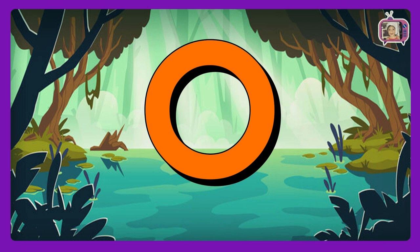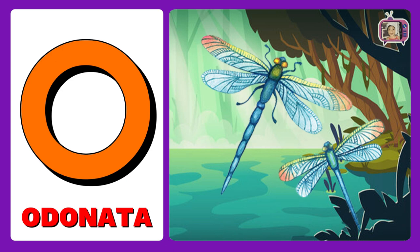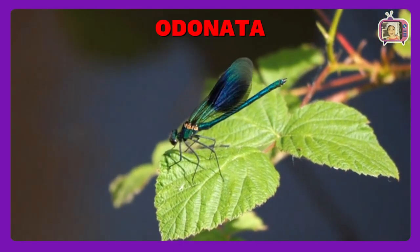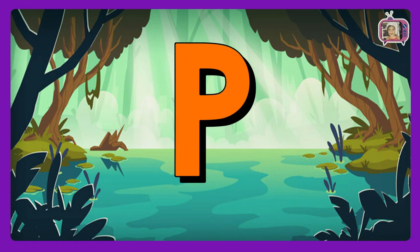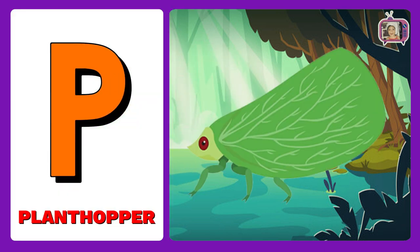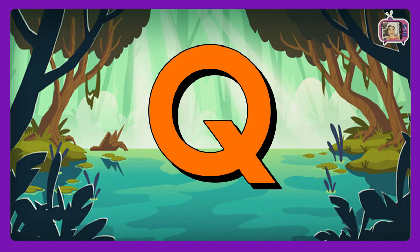O is for Odonata. Odonata. P is for Planthopper. Planthopper.